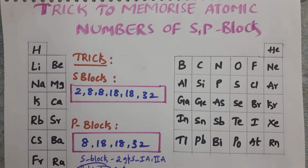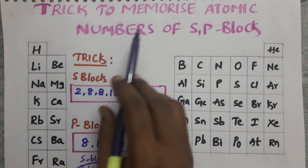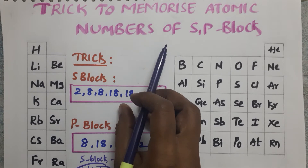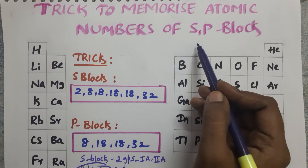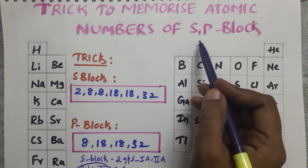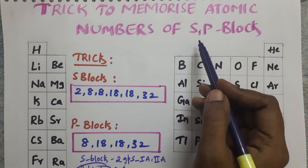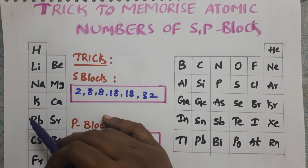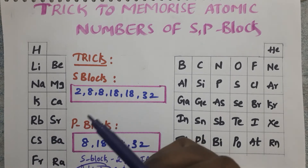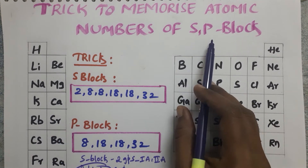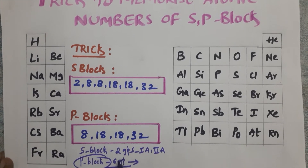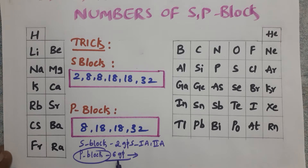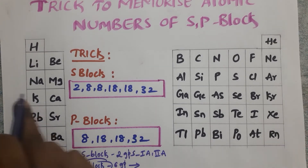Hello everyone, welcome to my channel. Today our topic is a trick to memorize atomic numbers of s and p block elements. I already made a video on how to memorize the periodic table easily for s and p block, which I will provide in the description box. Now, s block includes group 1 and group 2, and the remaining six groups are included in p block elements.